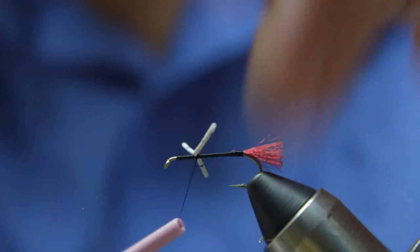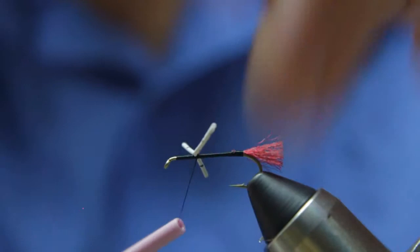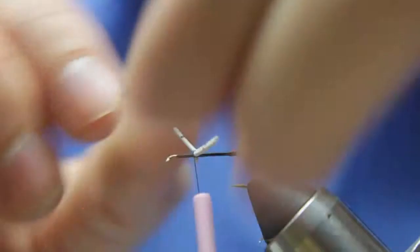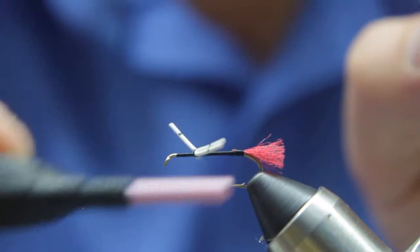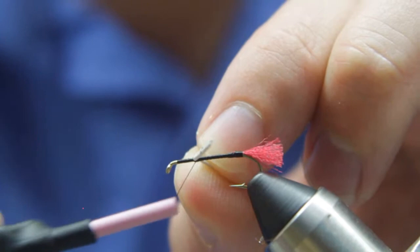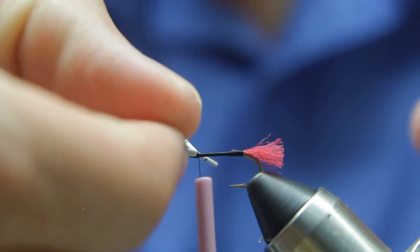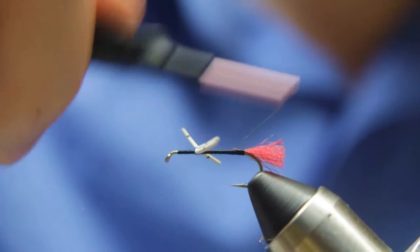Now if you do this right, normally the legs will stay together. Sometimes they don't. And when they don't, you just deal with it. Continue to figure eight that and cross wrap it. And then we're going to wrap all the way back to the bend of the hook with the thread.